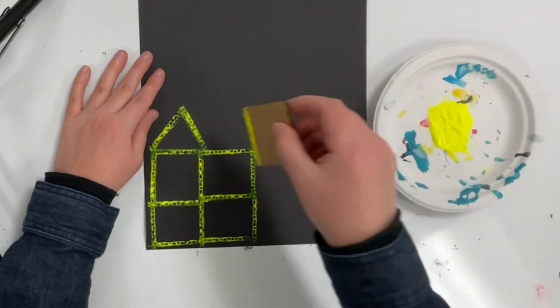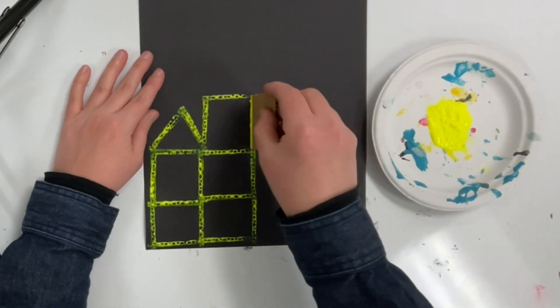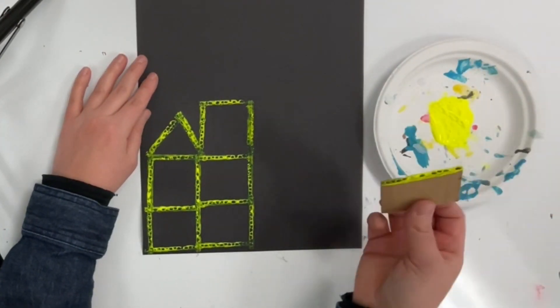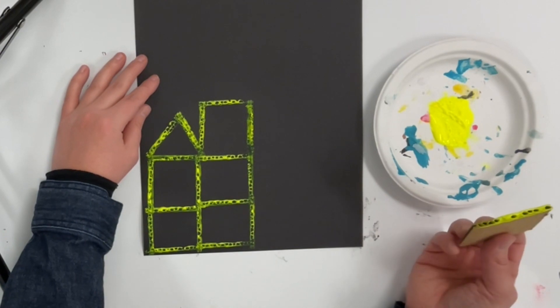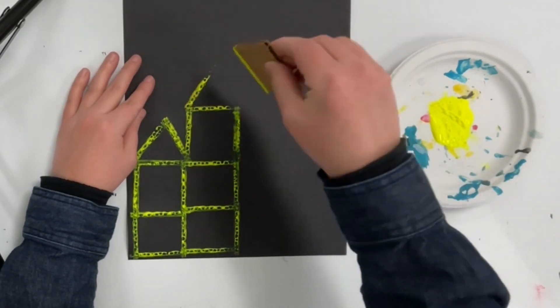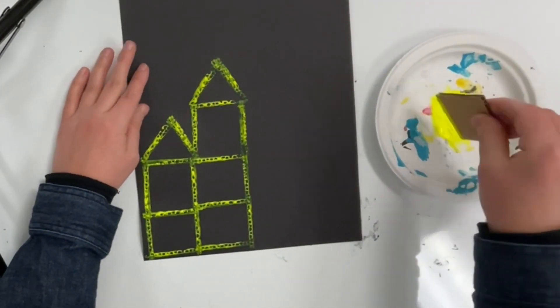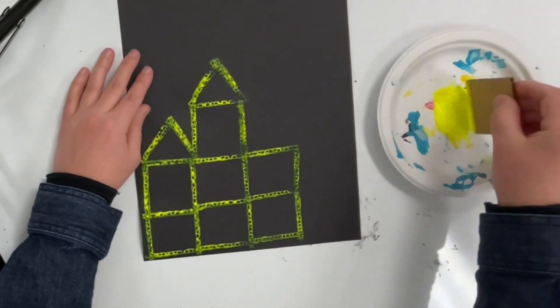I'm printing lines to create shapes like squares, rectangles and triangles. I'm building my castle from the bottom up, almost like I'm building it out of blocks, and you can tell I'm inspired by Paul Klee at this point.